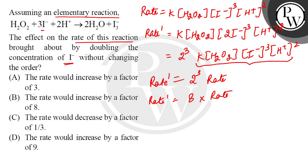So rate would increase by a factor of 3? No. Rate would increase by a factor of 8? Yes. Rate would decrease by a factor of 1 by 3? No. Rate would increase by a factor of 9? No. So B option is correct here. Rest options are incorrect. I hope you understood. Thank you.